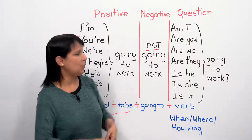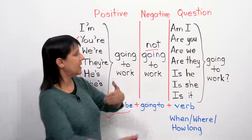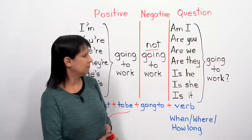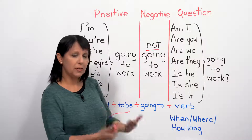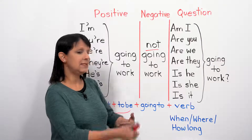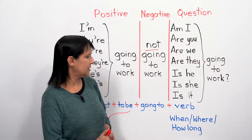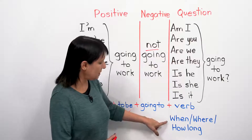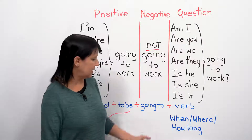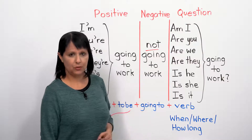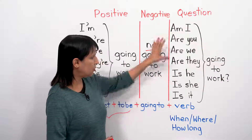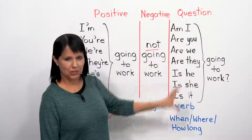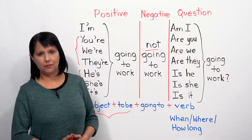For questions, we change the order - we reverse it. Instead of 'I am,' we say 'Am I?' and now we use the full form of the verb to be with no contractions: 'Am I going to work tomorrow?' 'Are you going to work tomorrow?' 'Are we going to work?' 'Are they going to work?' 'Is he going to work?' 'Is she going to work?' 'Is it going to work?' You can also add a question word before that: 'When are you going to work?' 'Where are you going to work?' Just keep the same structure.